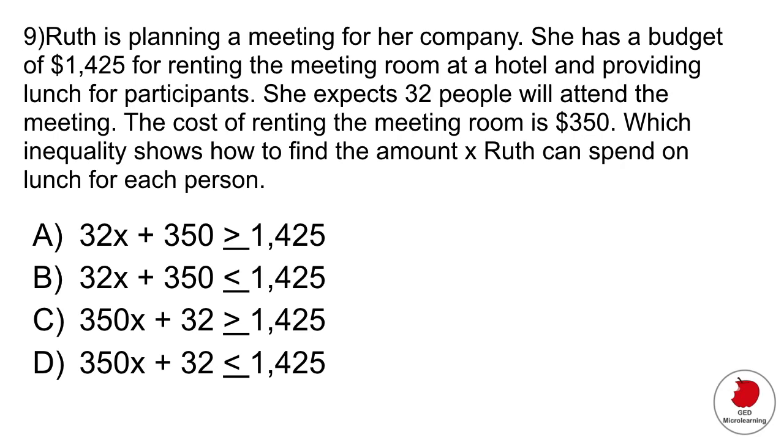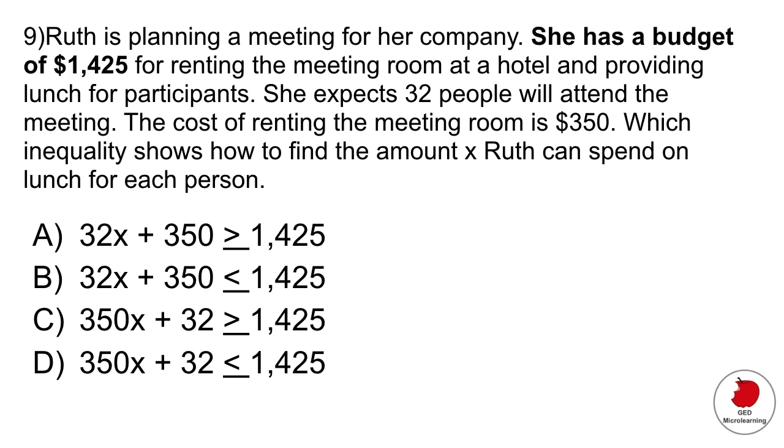Ruth is planning a meeting for her company. She has a budget of $1,425 for renting the meeting room at a hotel and providing lunch for participants. She expects 32 people will attend the meeting. The cost of renting the room is $350. Which inequality shows how to find the amount x that Ruth can spend on lunch for each person? One important detail: she has a budget of $1,425, so that means she can spend up to that amount. She can spend less than that amount or equal to that amount, but not more.